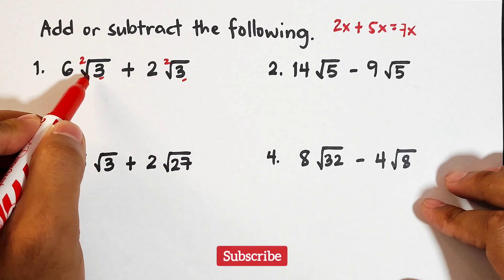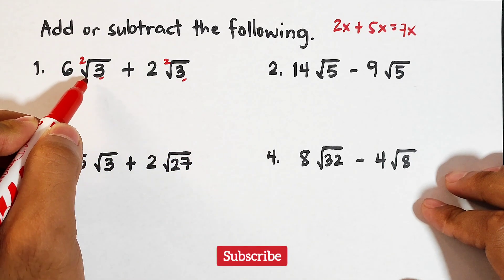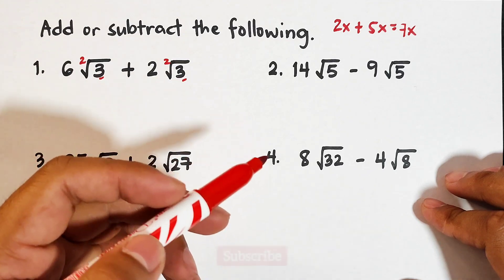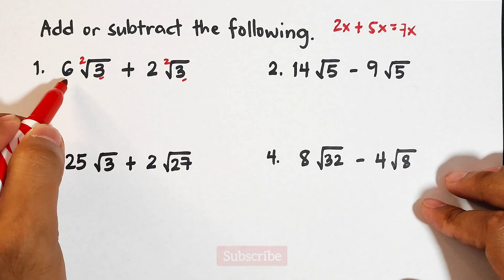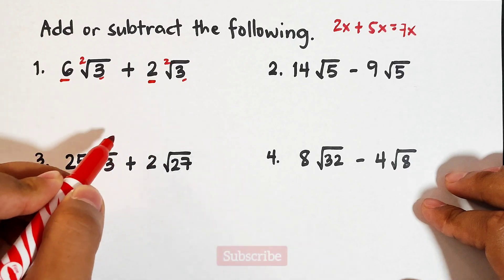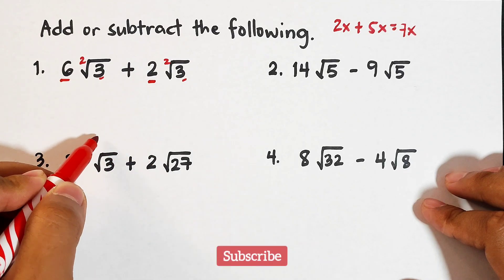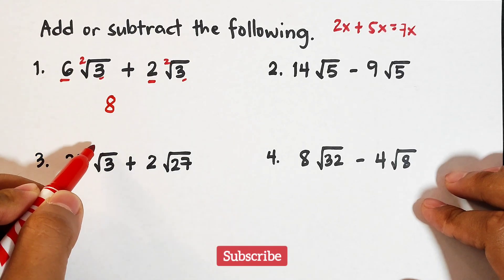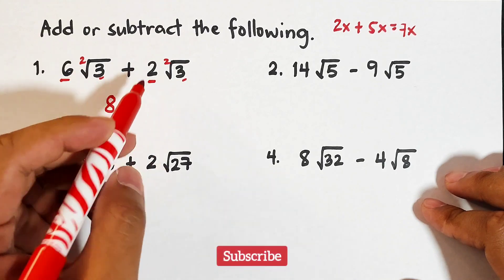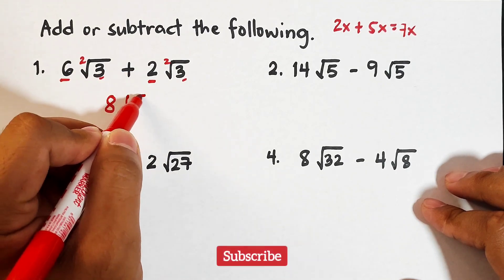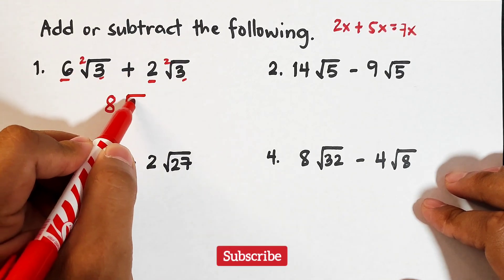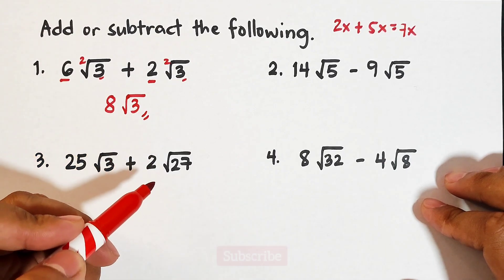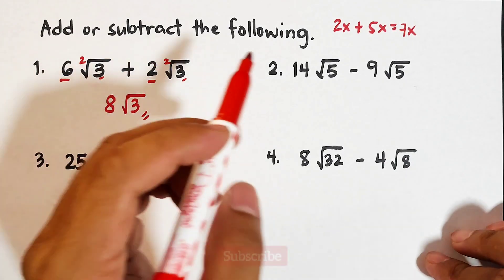We have the same case here. Both terms have the same radical, which is the square root of 3. We simply add the coefficients outside: 6 plus 2 equals 8, then copy the radical. The answer is 8 square root of 3.